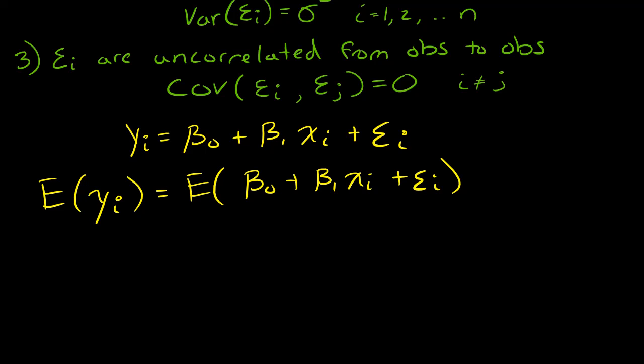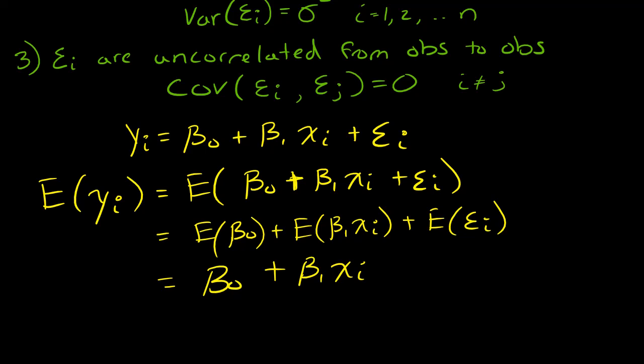And remember you can kind of distribute an expected value with a sum. So this is going to equal the expected value of beta naught plus the expected value of beta one times x sub i plus the expected value of epsilon sub i. And beta naught is not random, that is the model parameter, so it's just beta naught. The expected value is just beta naught. Same thing with beta one times xi, it's not random. But then lastly, I have this expected value of this error term, which we have assumed it's zero. So lastly, I'm left with my expected value of yi equals beta naught plus beta one times xi.